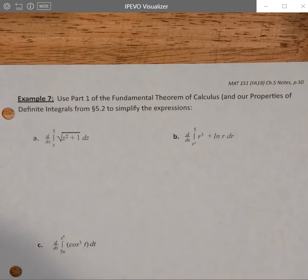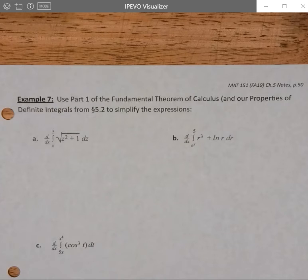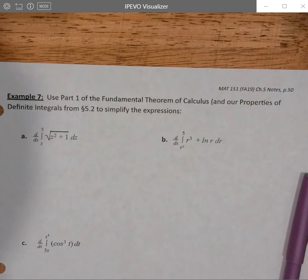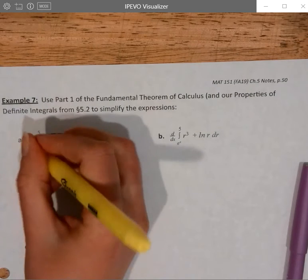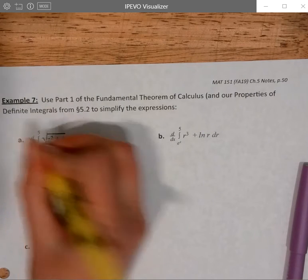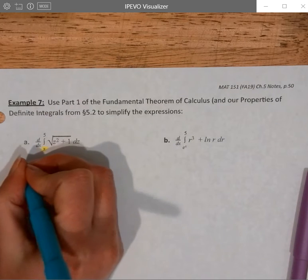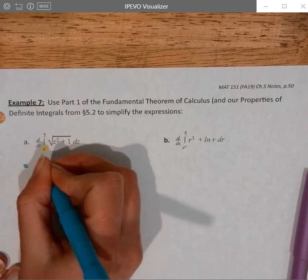Okay, and then the next page, again, making use of the Fundamental Theorem Part 1, but some other properties as well. Now, the Fundamental Theorem Part 1 was built to have x as the upper bound. What happens if it's the lower bound? Well, we know that we can rewrite this as negative.